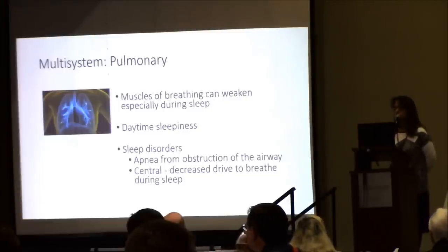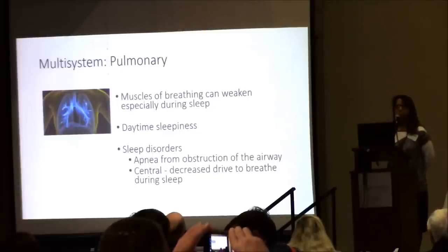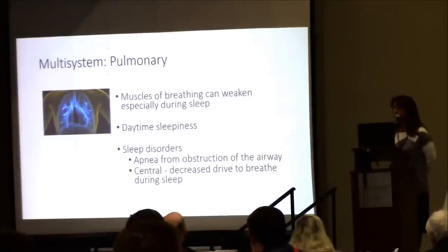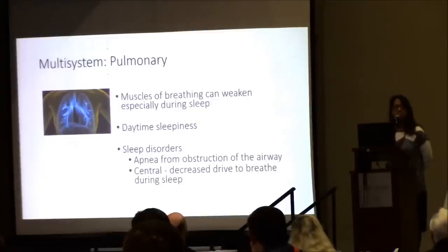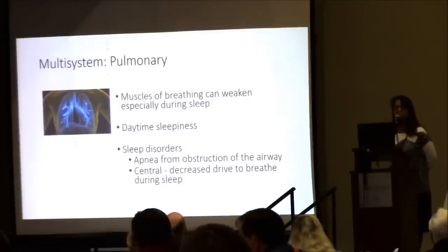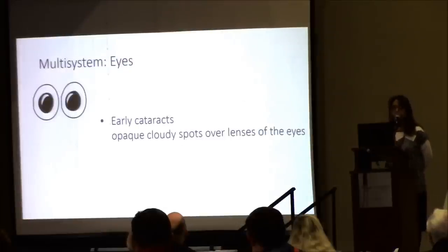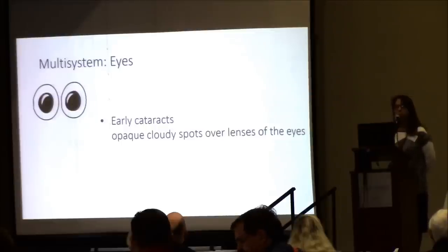Breathing can be affected in myotonic dystrophy — the lungs are actually normal, but the muscles of breathing can weaken, especially during sleep. This can lead to excessive daytime sleepiness, needing to sleep more, and sleep disorders such as apnea — when you stop breathing briefly. Apnea can be due to obstruction in the airway or a central apnea when the brain has decreased drive to breathe during sleep. The eyes can be affected with cataracts — a cloudiness or opaque film over the lenses — which need to be removed to preserve vision, occurring earlier than with normal aging, usually before age 50.